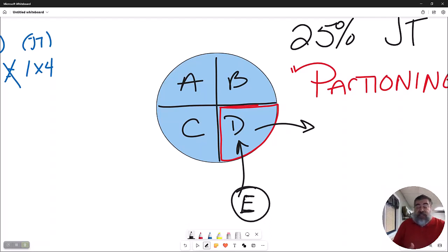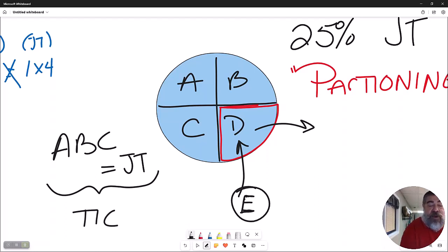So in essence, what you have is A, B, and C are still joint tenants. Their function did not get broken up. But together as a group, they are tenants in common with letter E. Because he came in at a new time, and therefore that broke joint tenants.